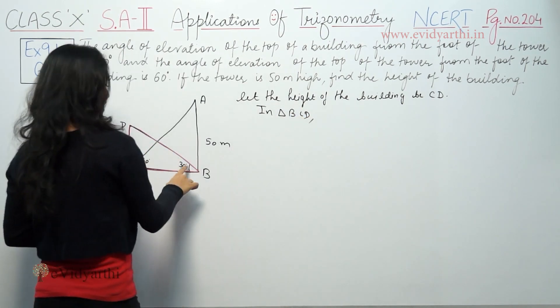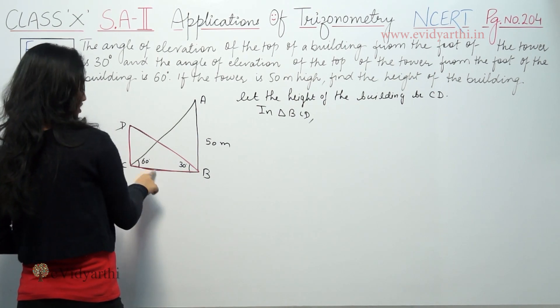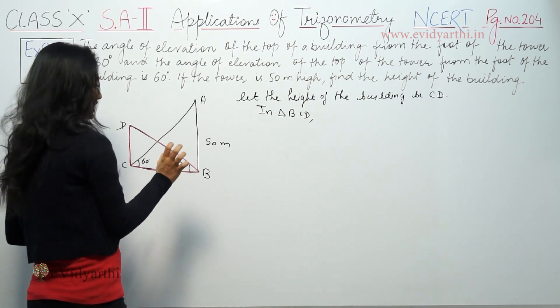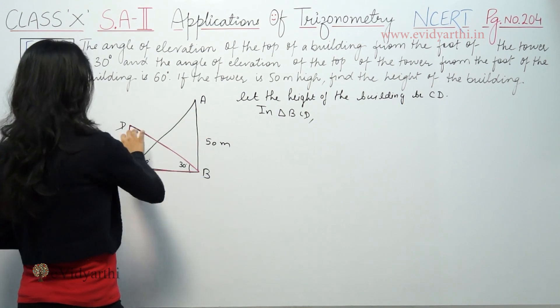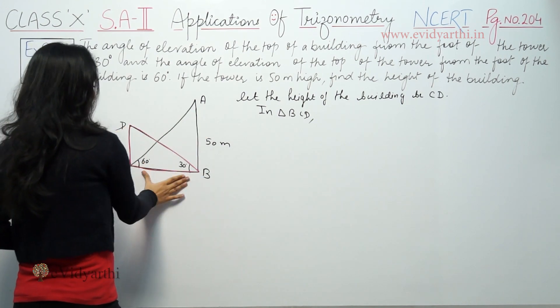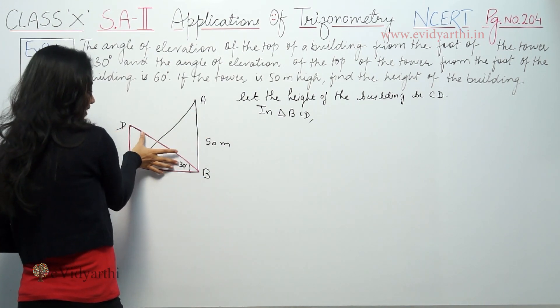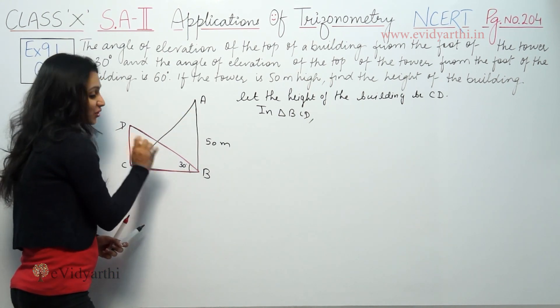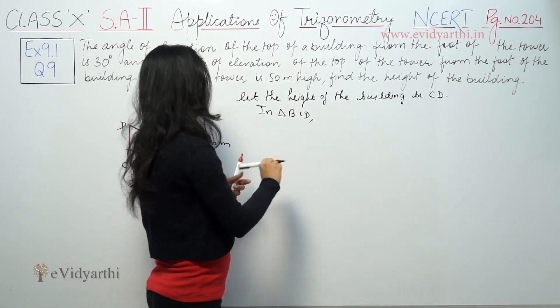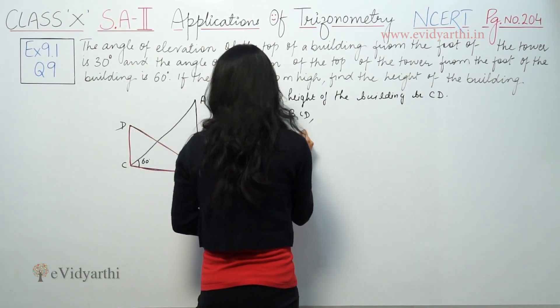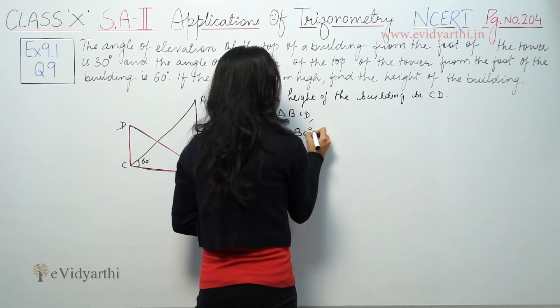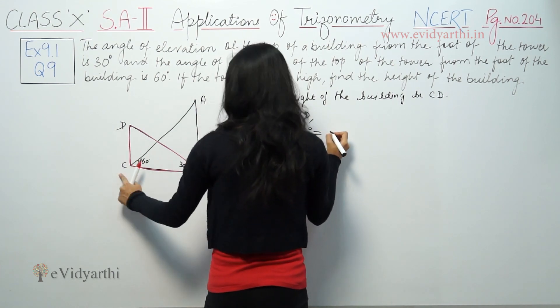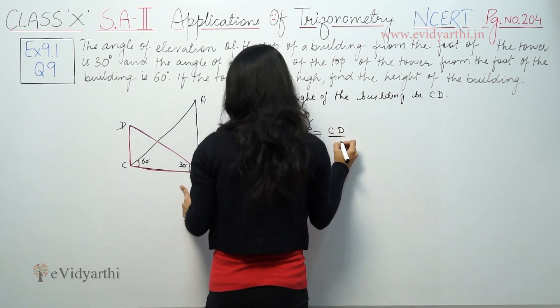To find the height of the building, we'll use the triangle with the angle we have. We use tan with the perpendicular and base. So tan of the angle equals perpendicular over base.